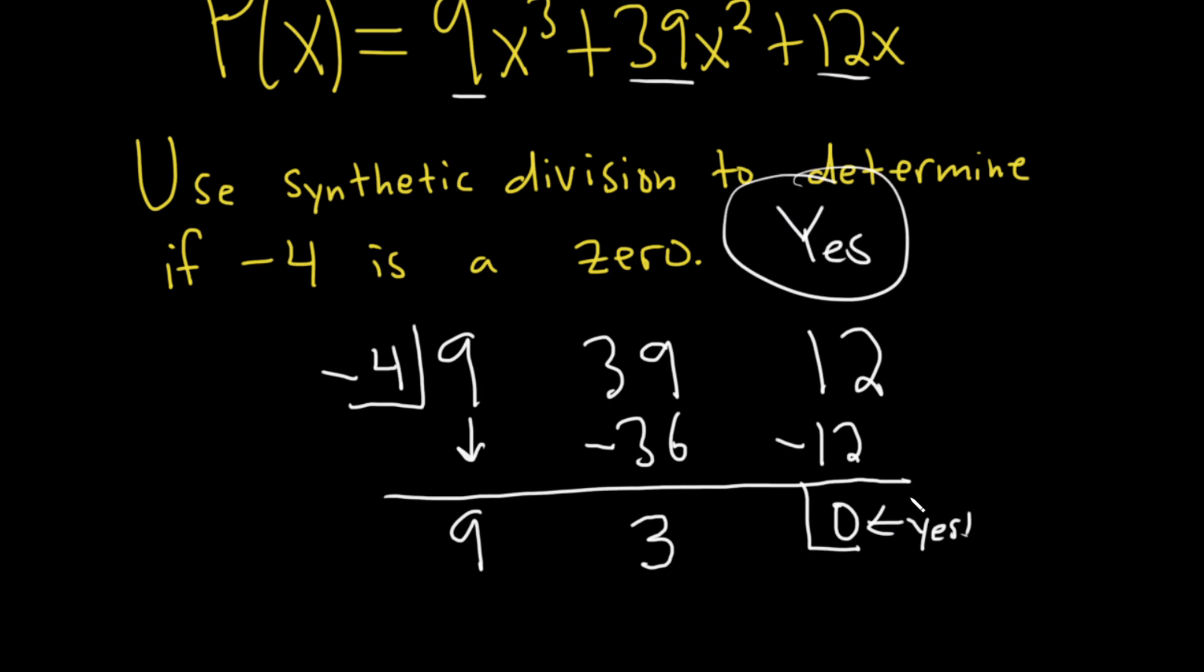So if you don't get 0, the answer is no. So whenever you have a number and you're trying to determine if it's the zero of a polynomial, a really easy way to do it is just try synthetic division. You can also just plug it in, but if you do synthetic division, then if you get the remainder of 0, then you know that it is a zero.